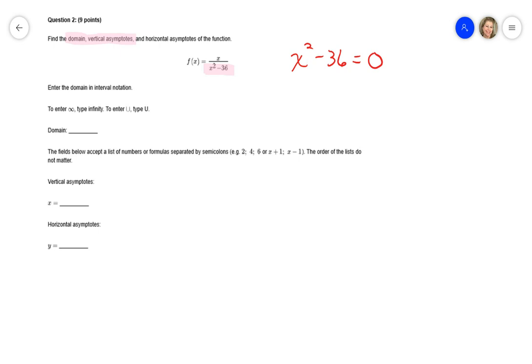So just take your denominator, set it equal to zero, and solve it for x. I can either factor or I'm actually going to add the 36 over to the other side, and then I'm going to square root both sides, and so my two answers are either positive or negative 6.